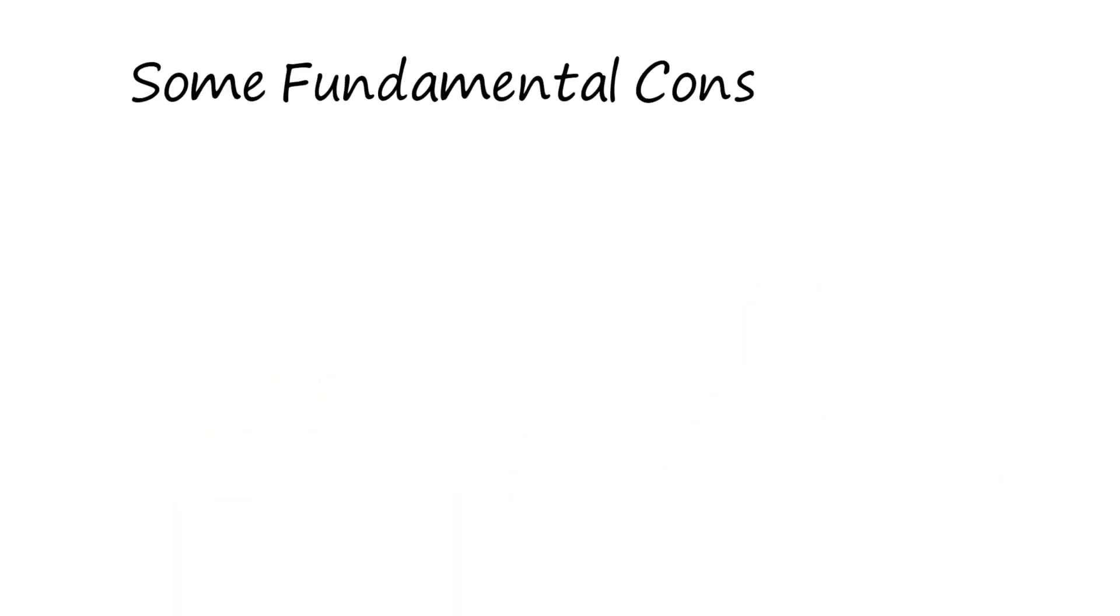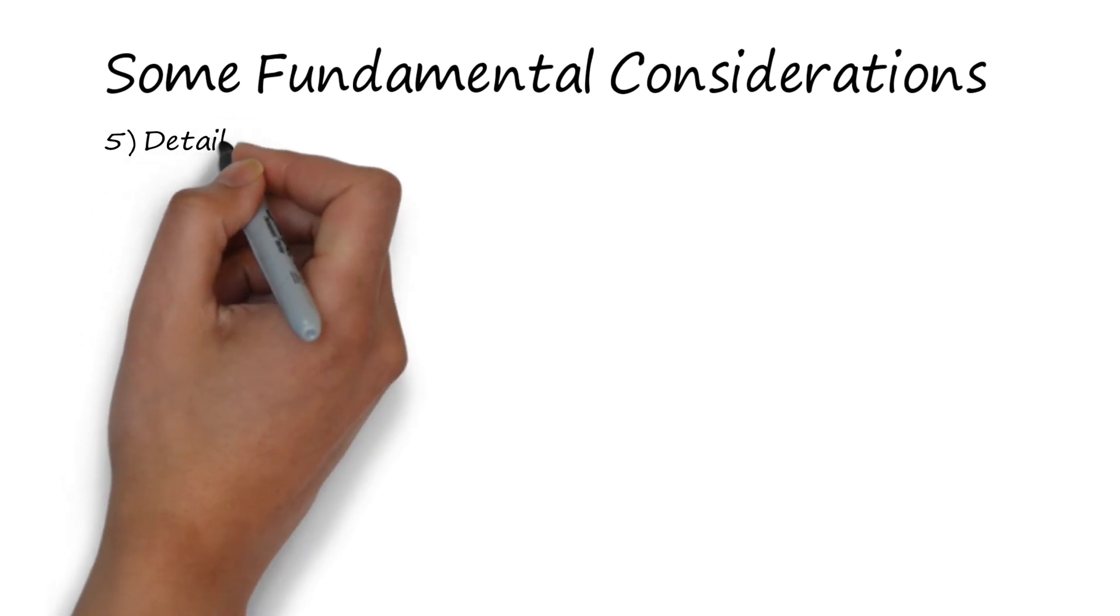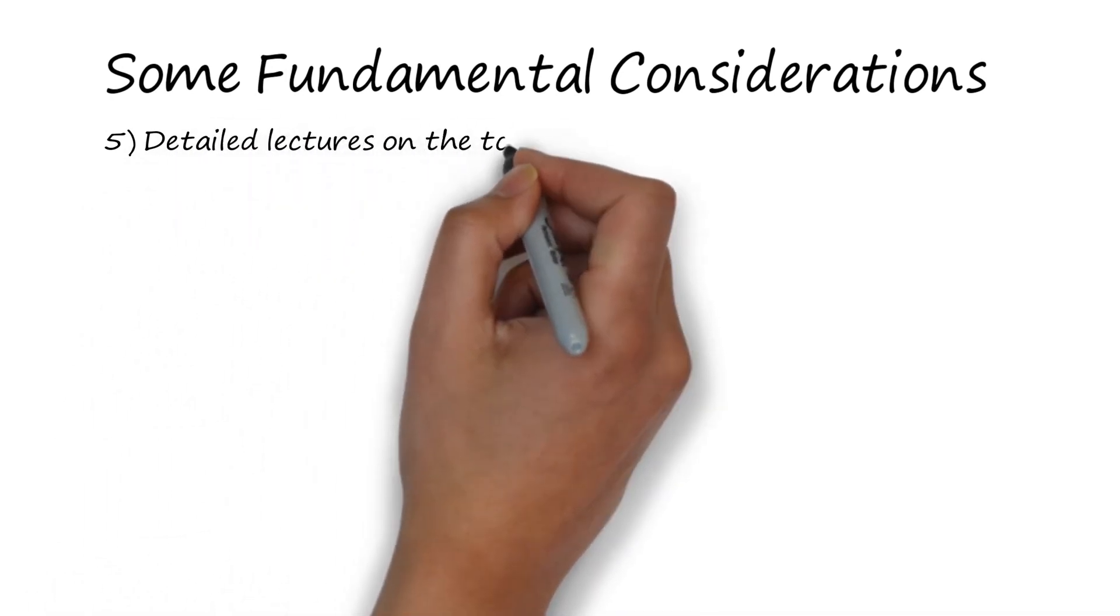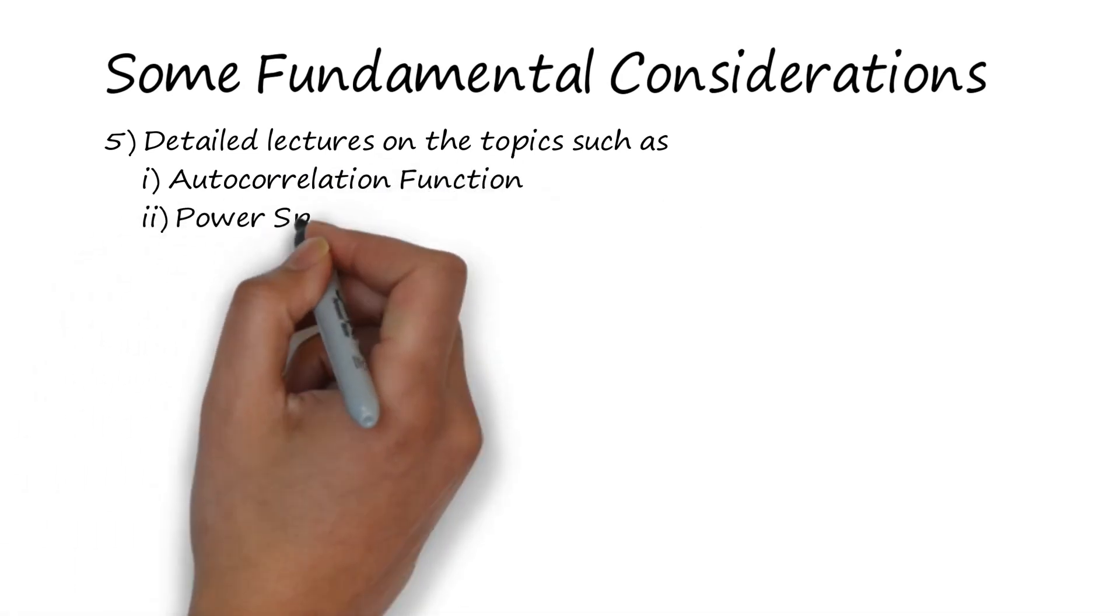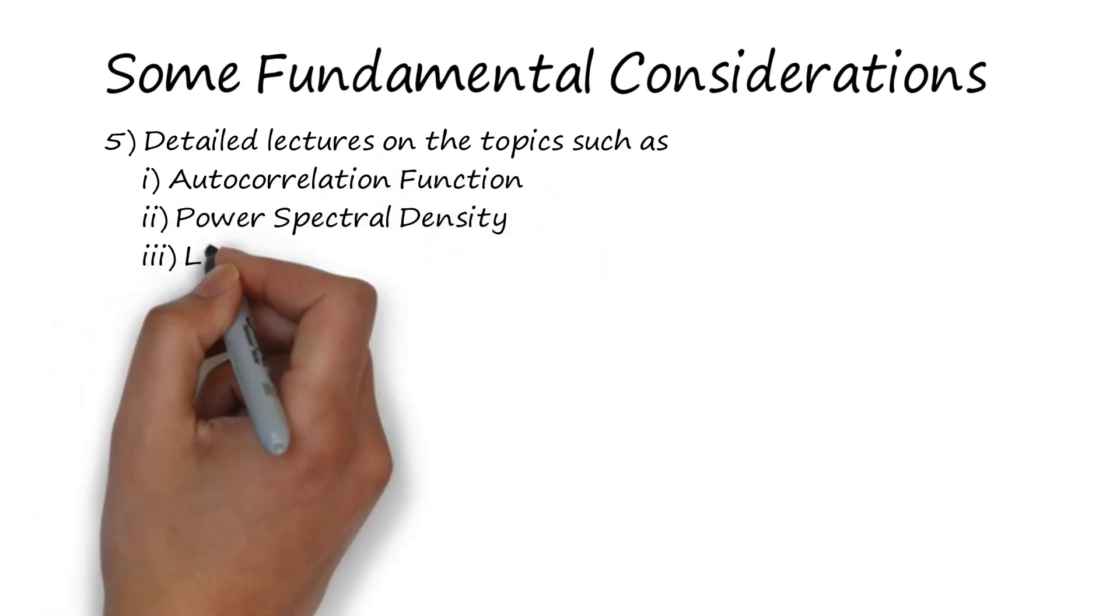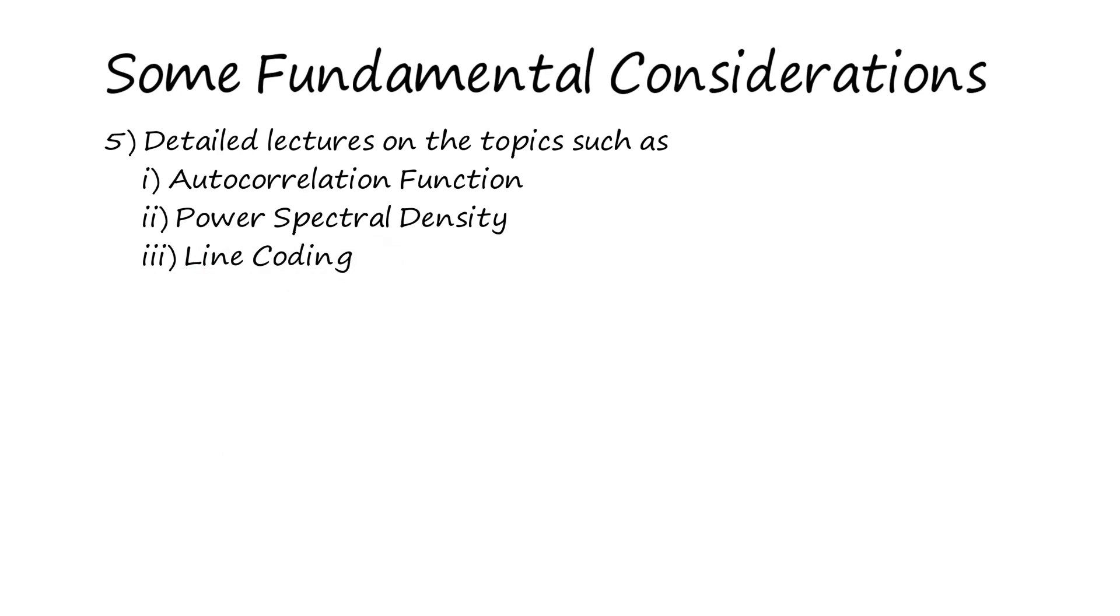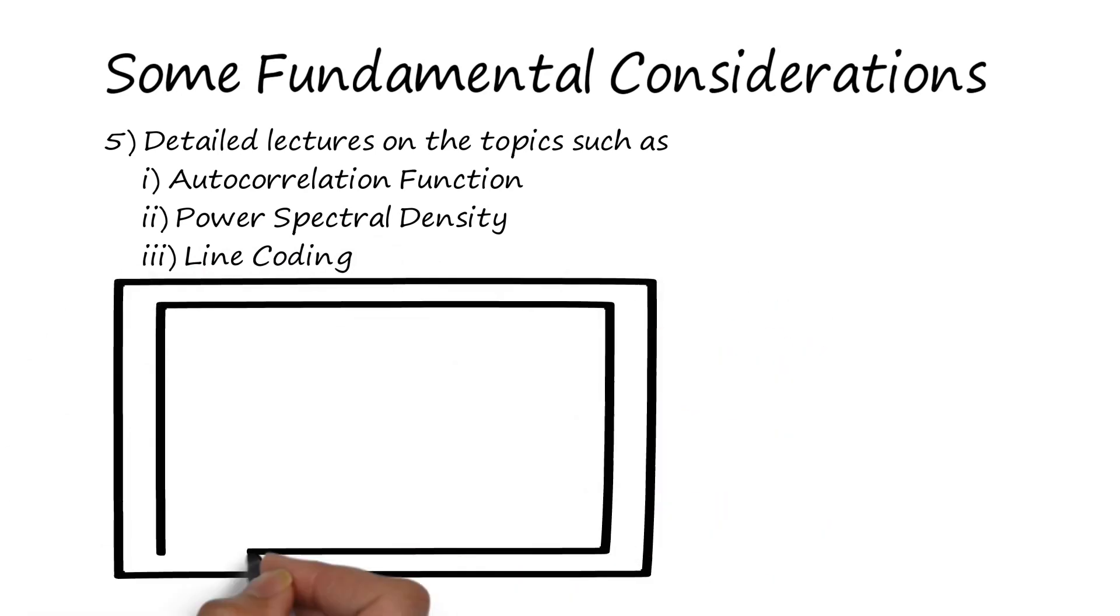This video expresses bandwidth and data rate in simple form at a certain abstraction level. Topics such as autocorrelation function, power spectral density, and line coding are expressed in greater detail in the communication system playlist.